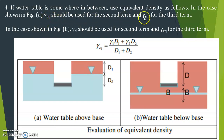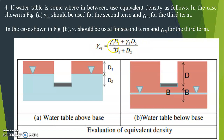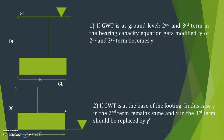If the water table is somewhere in between, use an equivalent density. In the first case shown in the figure, if the water table is within the depth D, then γ_sat should be used for the second term and γ_sat for the third term. In the second case, if the water table is below the foundation base, use γ_d for the second term and γ_equivalent for the third term. γ_equivalent = (γ₁d₁ + γ₂d₂)/(d₁ + d₂).